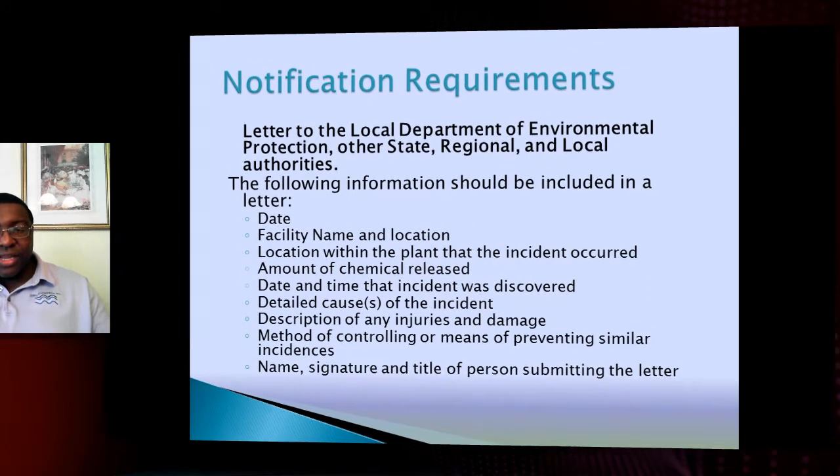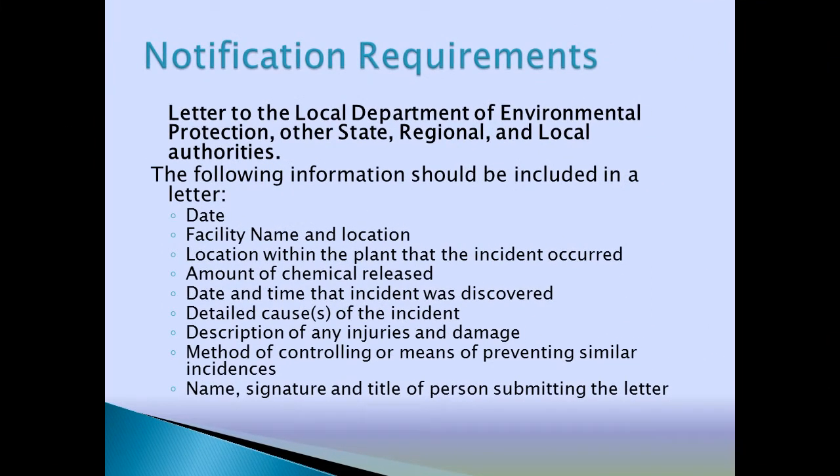Describe any injuries or damage. You're going to write down the method of controlling anything from happening in the future — that goes right back to your incident investigation. The notification will include all of that. You also have to have a name, signature, and title of the person submitting the letter — whether it's the compliance officer, executive director, or chief operator, whoever is the responsible person for the risk management plan.